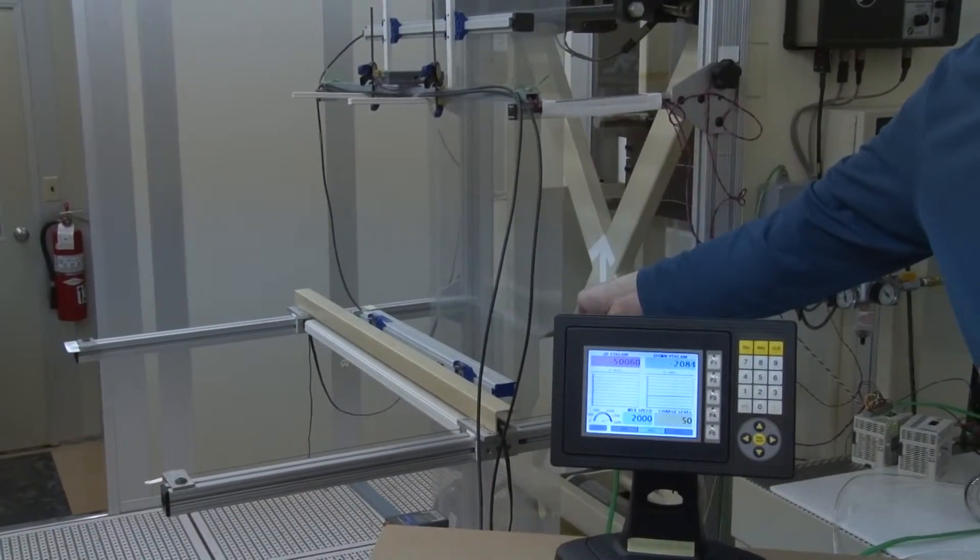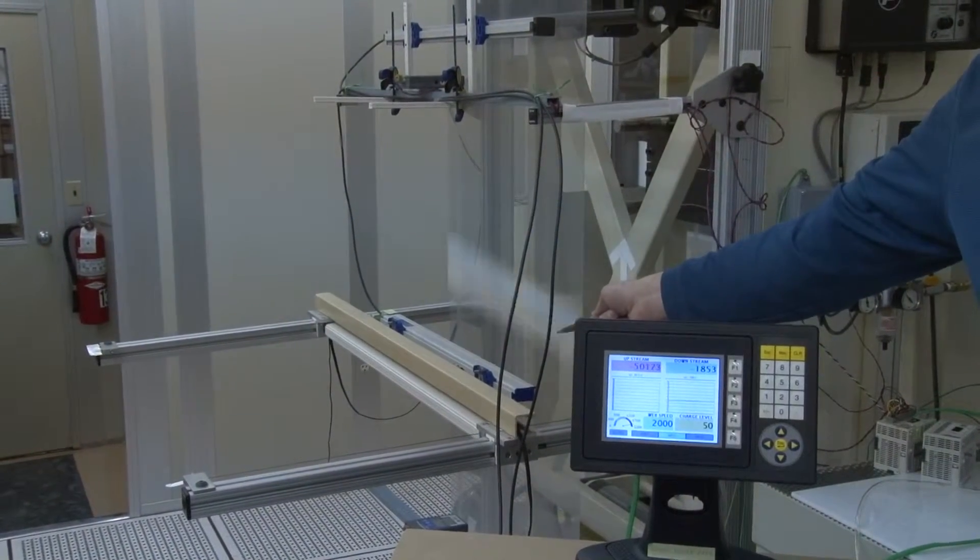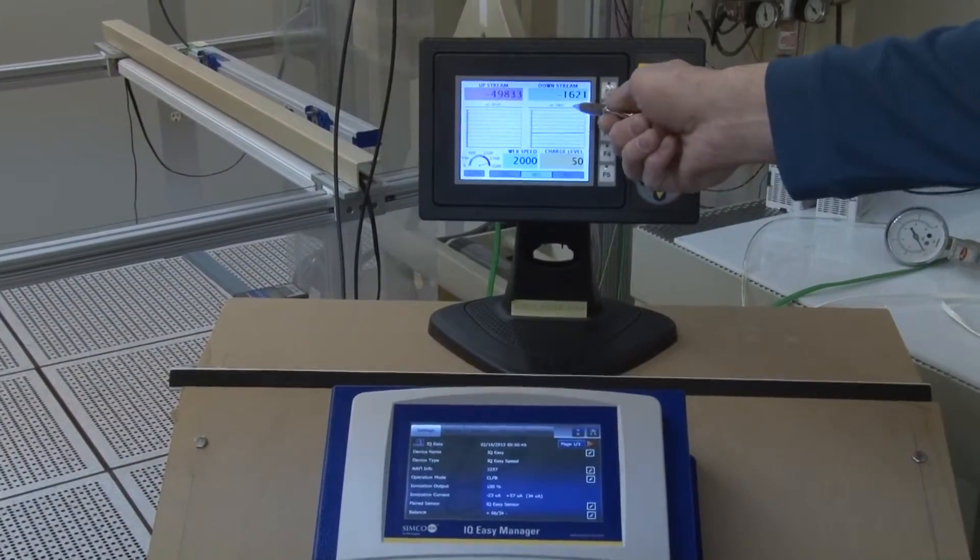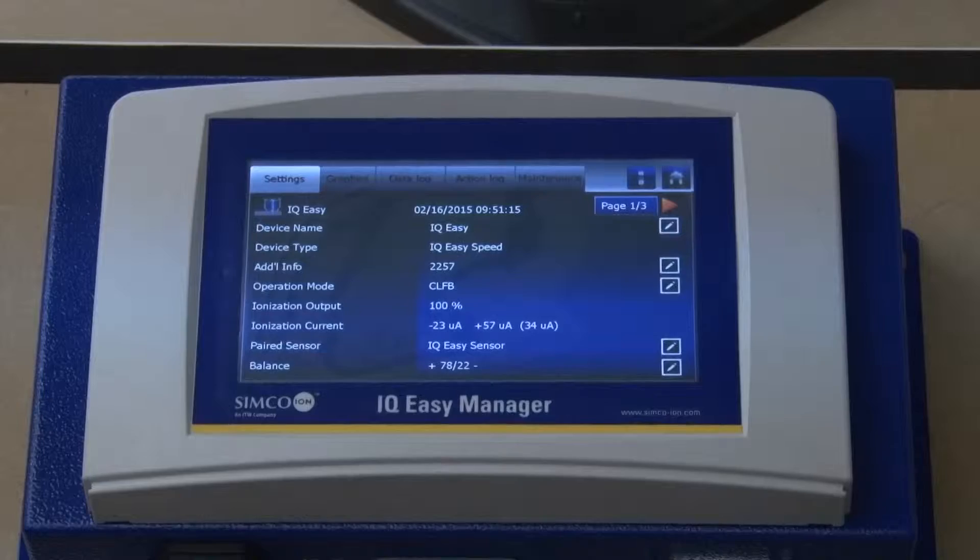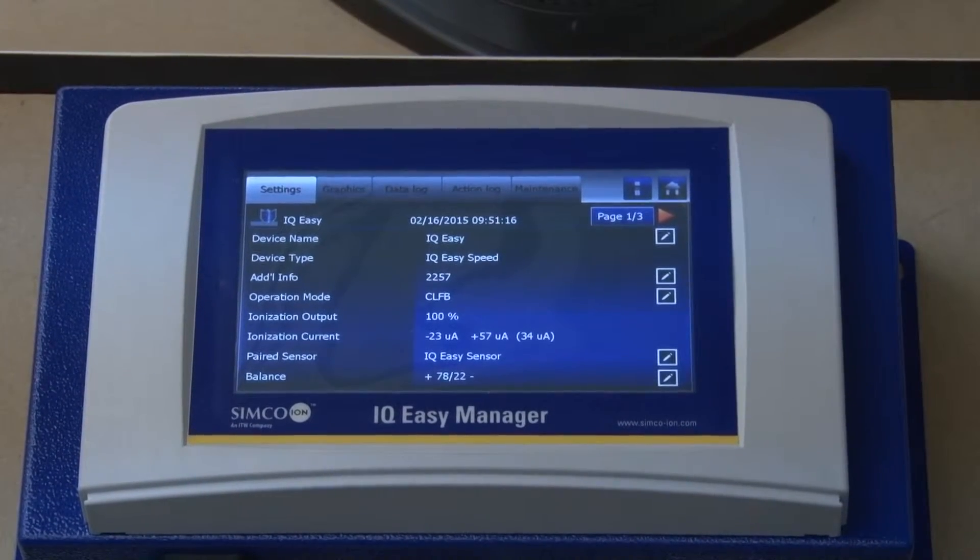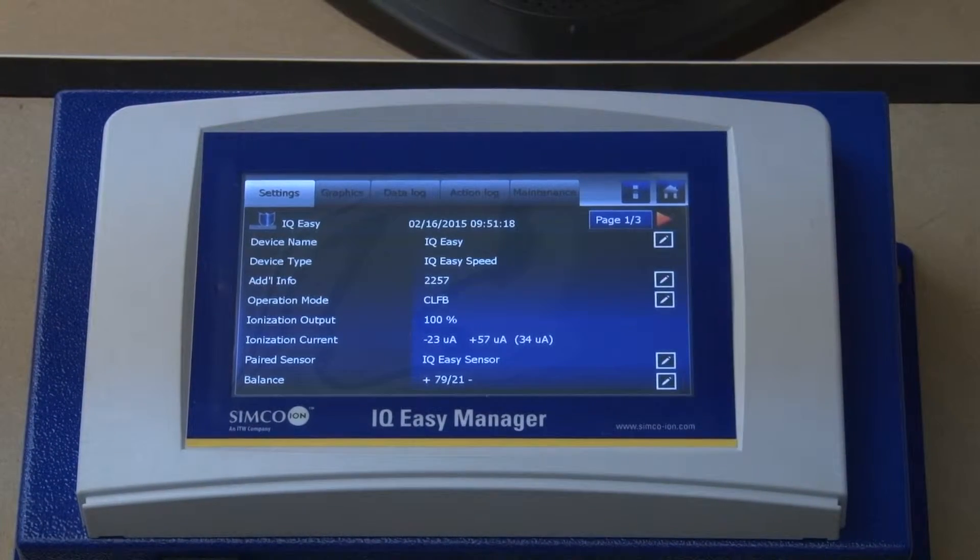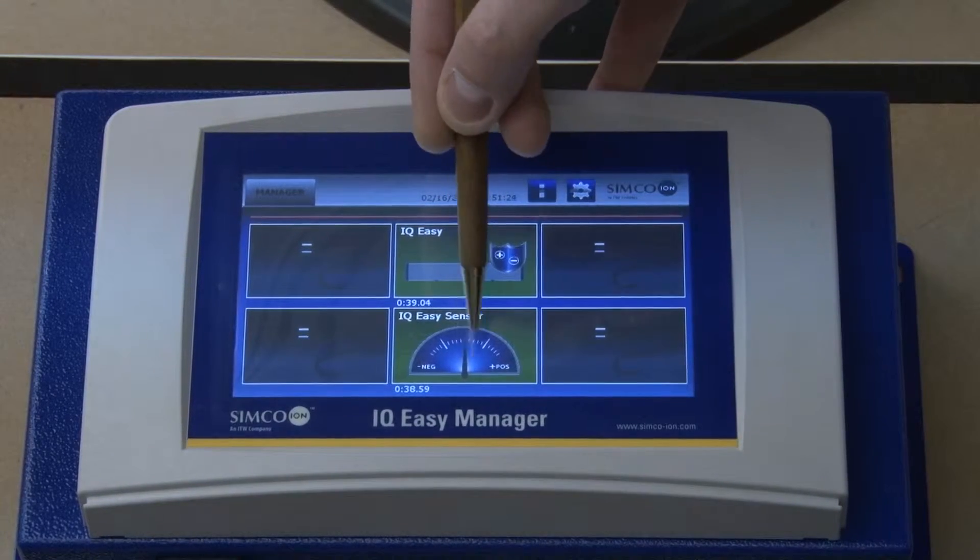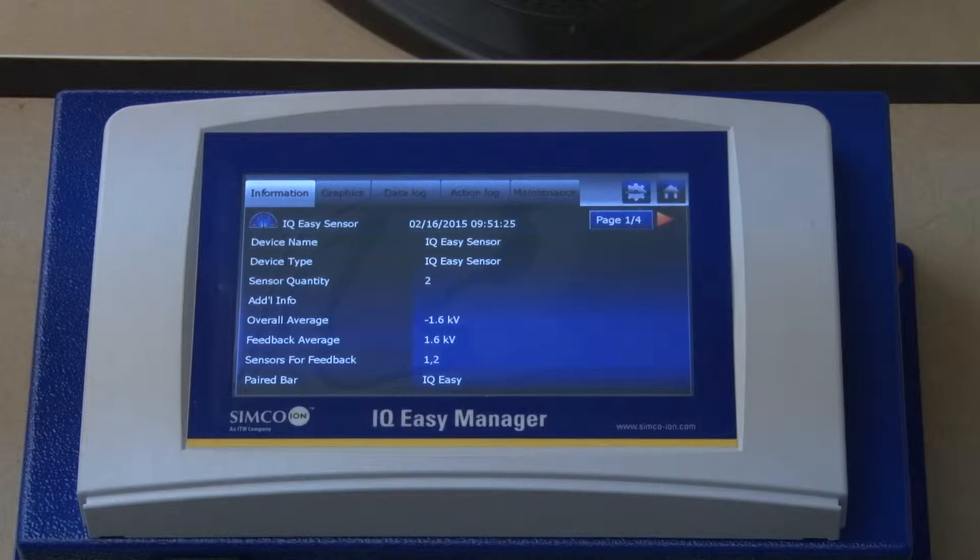This takes a little while for the sensor reading to dial in. To evaluate the performance of the neutralizing bar in the closed-loop feedback mode, we can return to the home screen of the manager and then take a look at the data that's provided by the sensor bar.